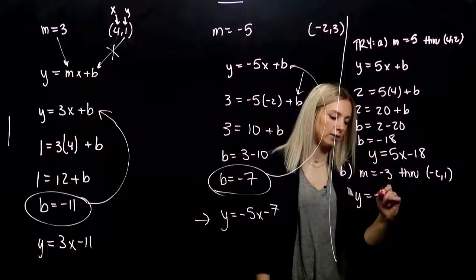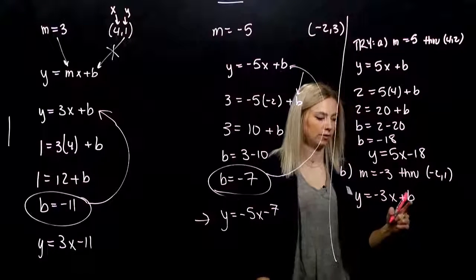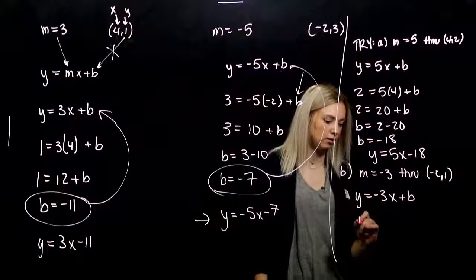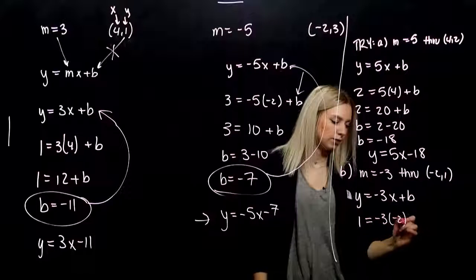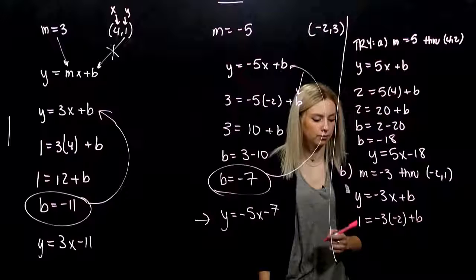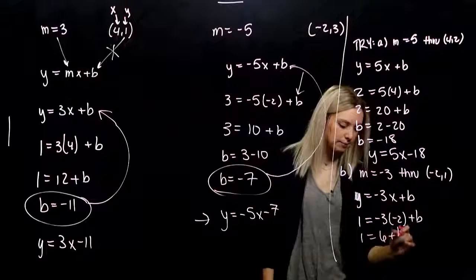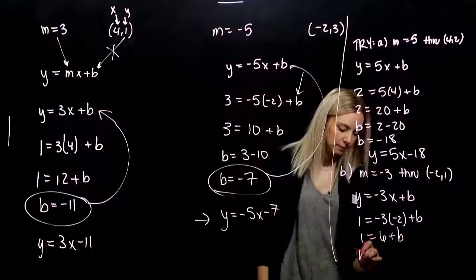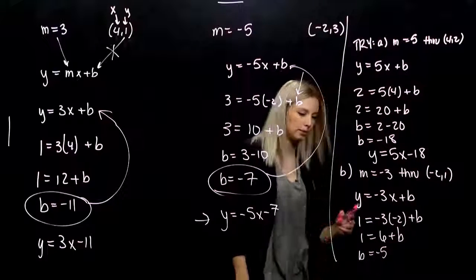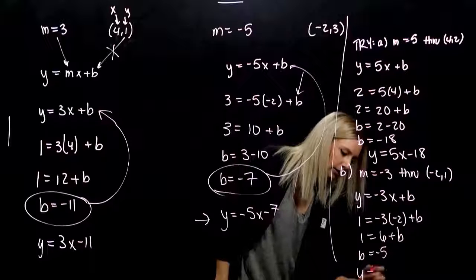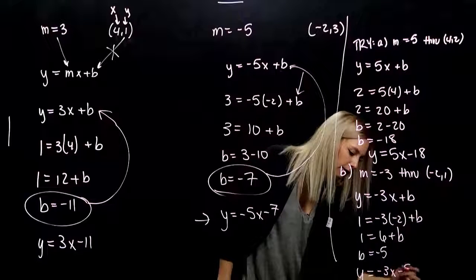Last one — plug in the information you know and solve for the unknown. When I plug in 1 for y and minus 2 for x, negative times a negative gives me positive 6. So b equals minus 5. The equation of the line is y = minus 3x minus 5.